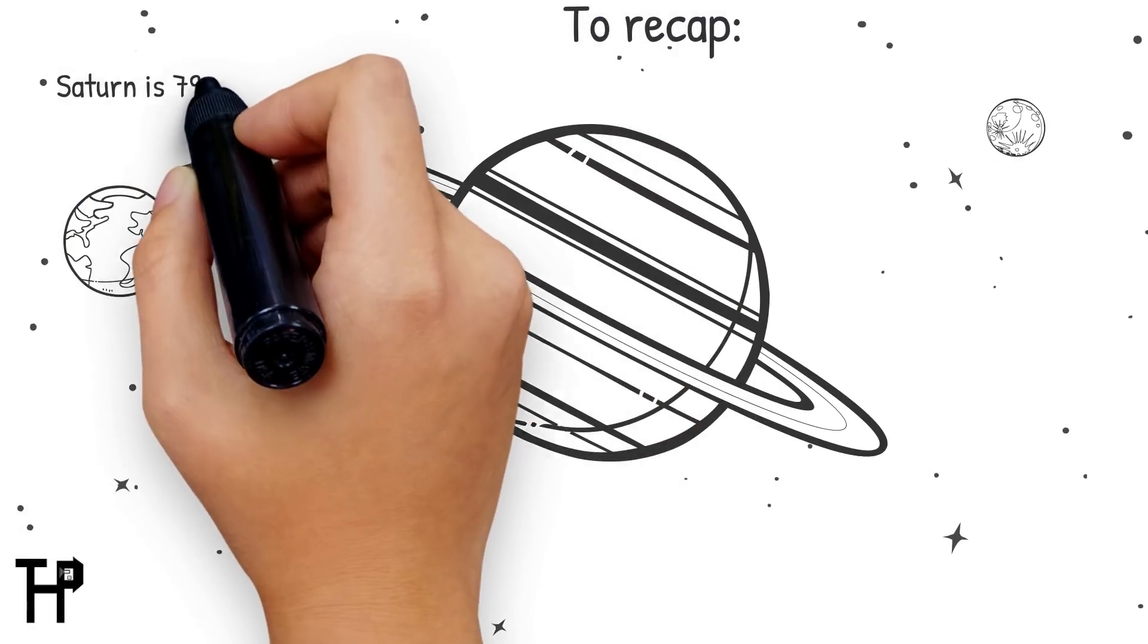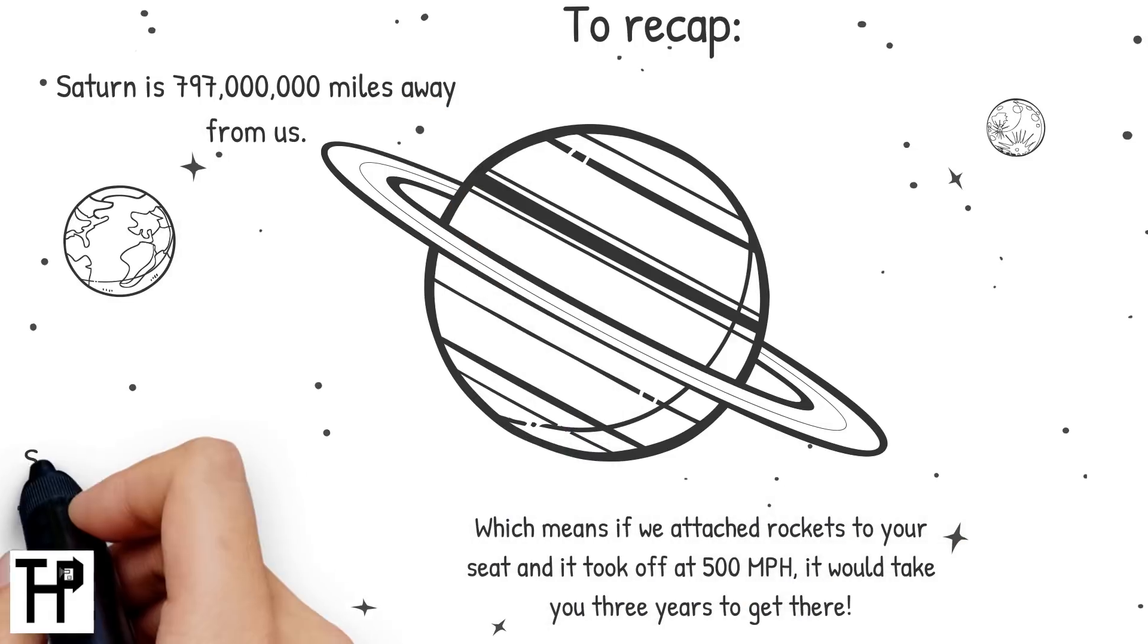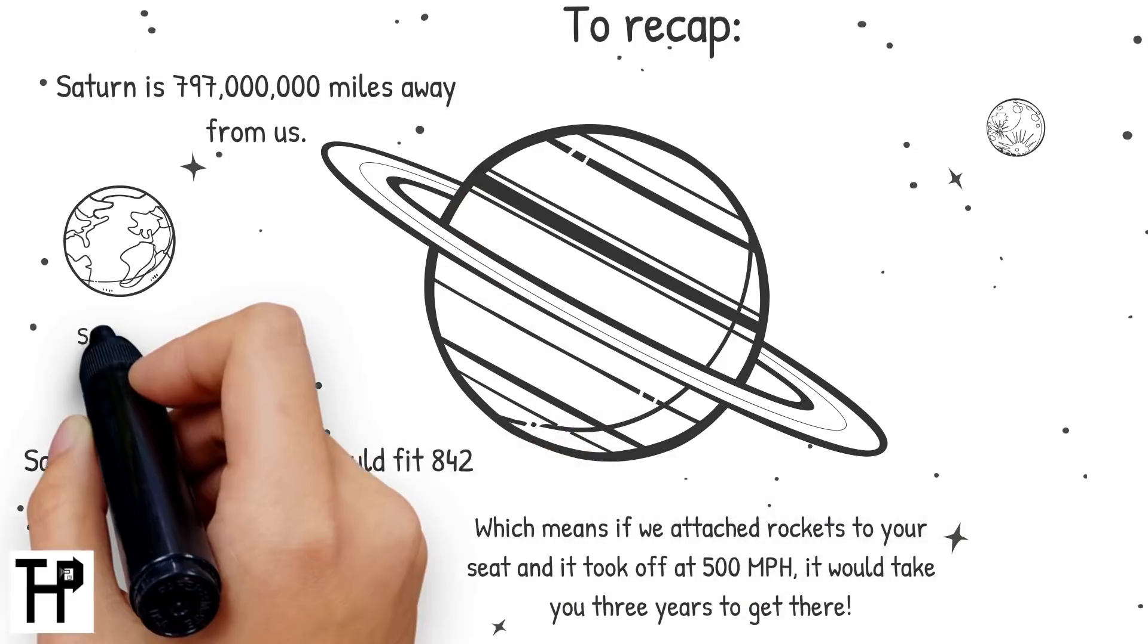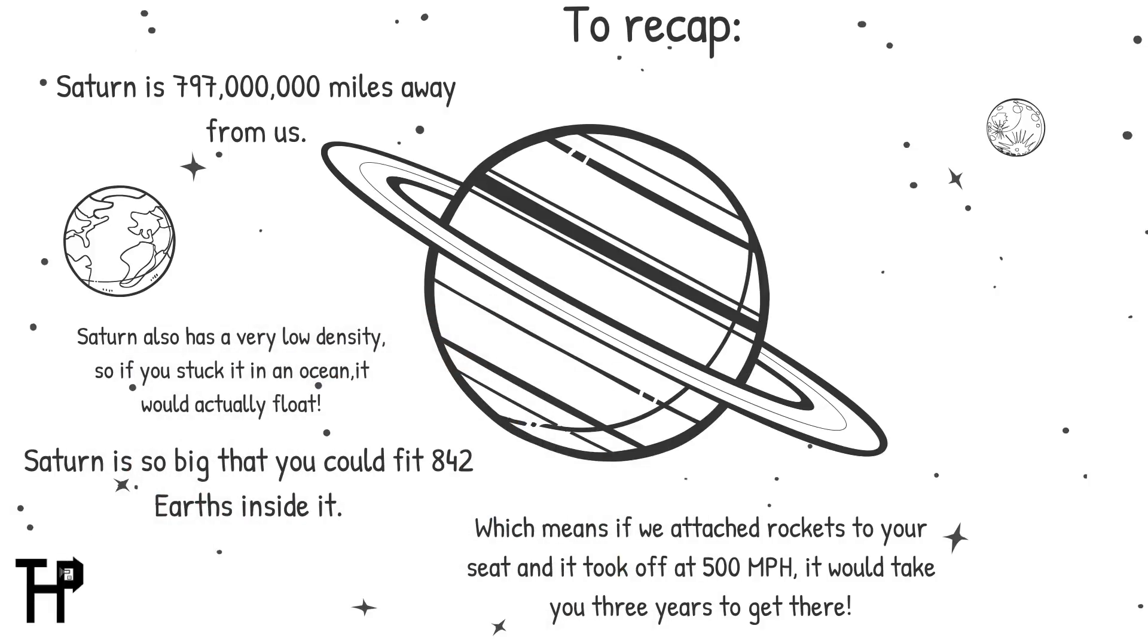So, to recap: Saturn is almost a billion miles away, which is a three-year journey at 500 miles per hour. Make sure you wear your helmet. It can fit 842 Earths inside of it, but it is still light enough that it would float if you put it in the ocean.